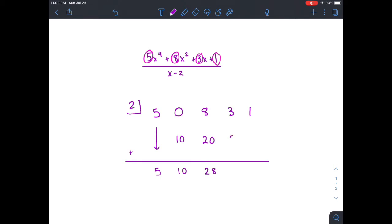And multiply 28 by 2, which gives us 56. Now we add the 56 and the 3, which gives us 59. Then we multiply 59 times 2. That's 118. And then finally we do 118 plus 1. And that gives us 119.